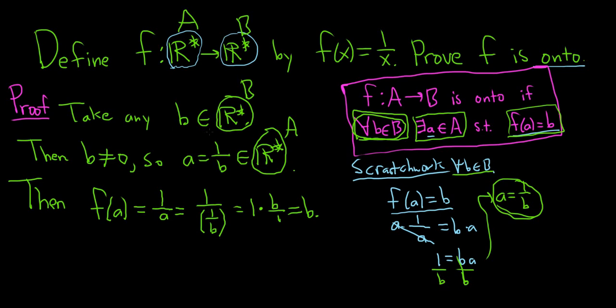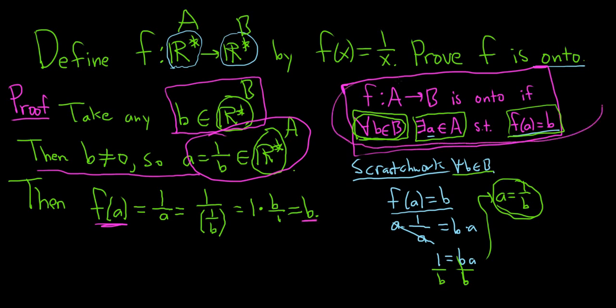So we started with any little b in capital B. We showed that little a belongs in capital A. And then we showed that f of a equals little b. So we satisfied the definition of what it means for a function to be onto. So thus f is onto. And that's it. Good luck.